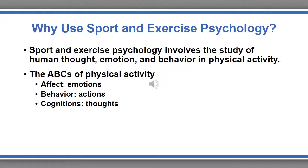Looking at why we use sport and exercise psychology, the study involves human thought, emotion, and behavior in physical activity. We look at the ABCs of physical activity: A is affect, which correlates with emotions; B is behavior, correlating with actions; and C is cognitions, correlating with thoughts.